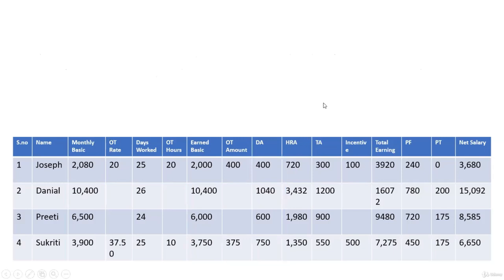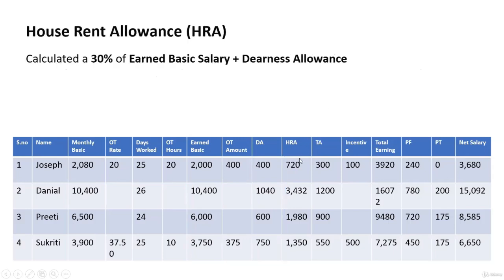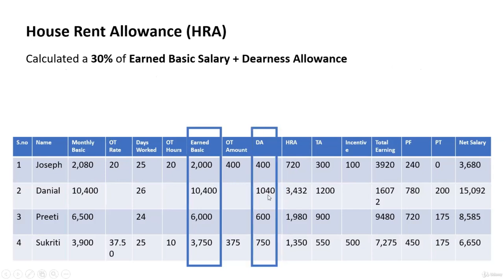House rent allowance is calculated on the basis of earned basic salary plus DA allowance. HRA = 30% of (earned basic salary + DA). For example, adding ₹2,400 and then calculating 30% gives a value of ₹720. HRA has been similarly calculated for Daniel, Priti, and Sukriti.